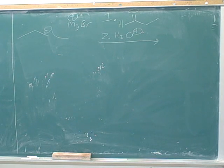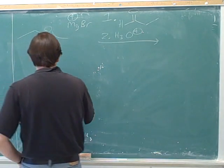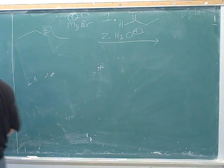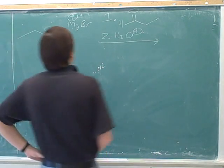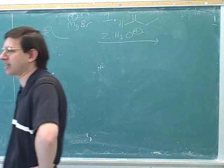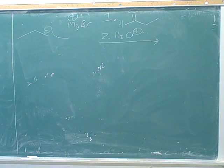Bases are not good at deprotonating carbons, because carbons are not electronegative. Grignards deprotonate electronegative atoms — especially oxygens — not carbons. Carbons are not acidic at all, so they don't react with bases. Electronegative atoms are more acidic and can react with a very strong base.